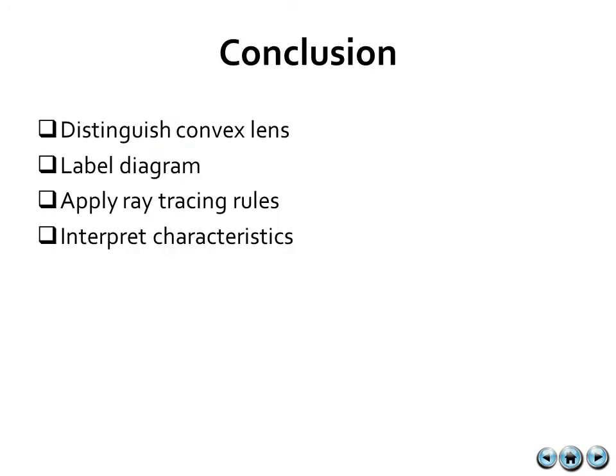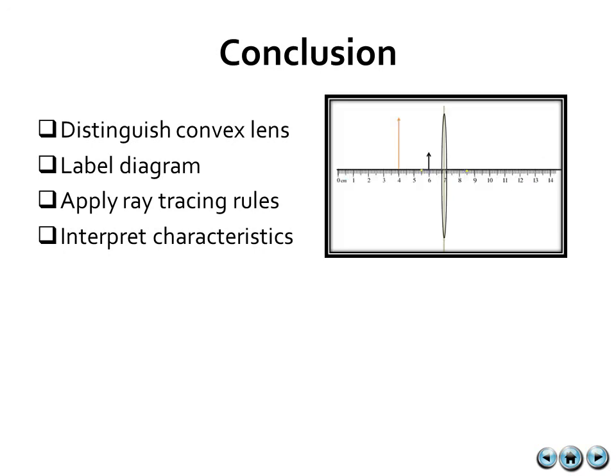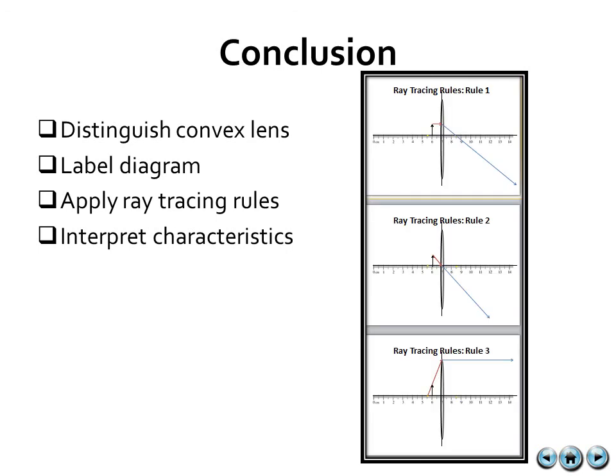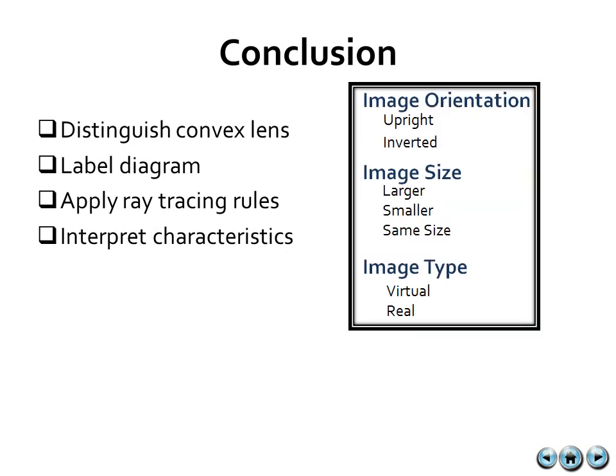So in conclusion, there are four main things that you should check off for this section. First, you should distinguish the convex lens and be able to compare it to the concave, realizing that a convex lens is a converging lens. You should be able to use the vocab that we've discussed in this session to label a ray diagram and to apply the three ray tracing rules. Lastly, you should be able to interpret the characteristics of an image, either by photo or by the ray tracing diagram.